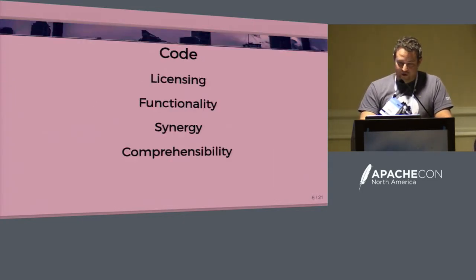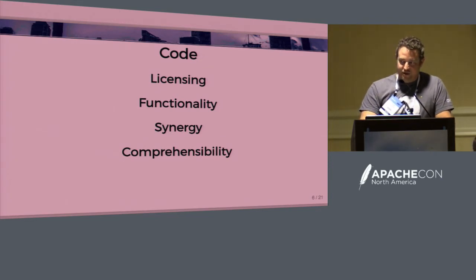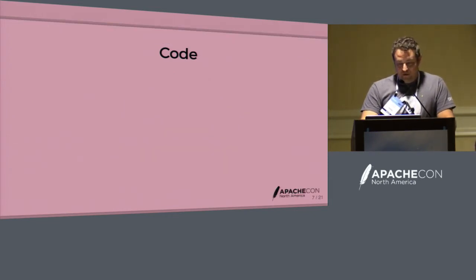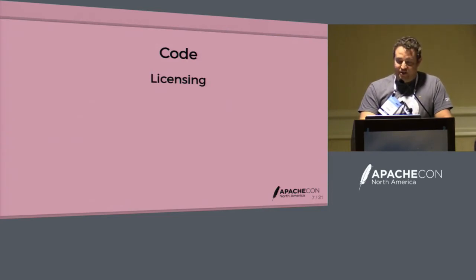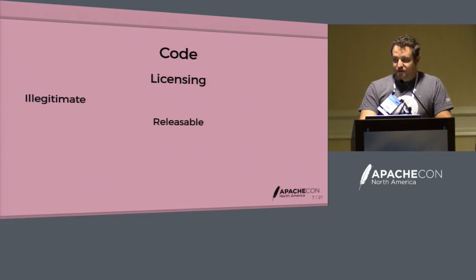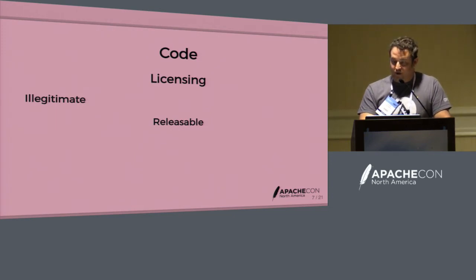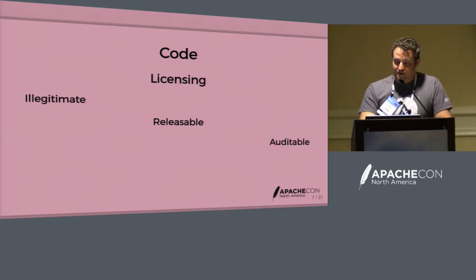Now, talking about code maturity — four dimensions: licensing, functionality, synergy, and comprehensibility. Licensing: is the code actually legit Apache code? Out of the gate, a lot of projects don't meet the minimum code standards for an Apache release — that's fine, that's why we have the incubator. The next stage is getting to releasable code. Getting a release through an IPMC vote is a significant milestone. Getting your license house in order to graduate is another thing — your project source code needs to be demonstrably free of any licensing issues by the end of your incubating journey.